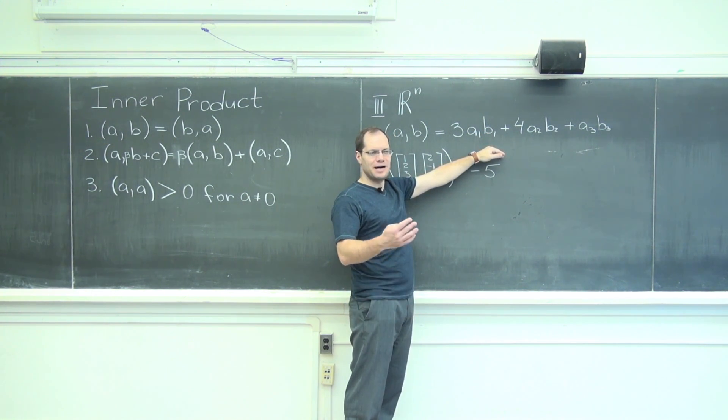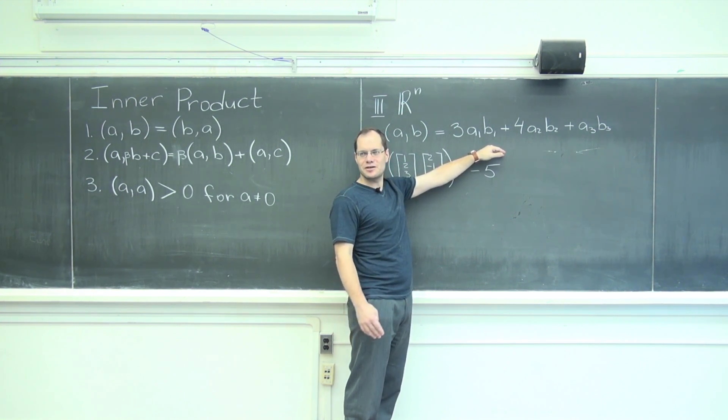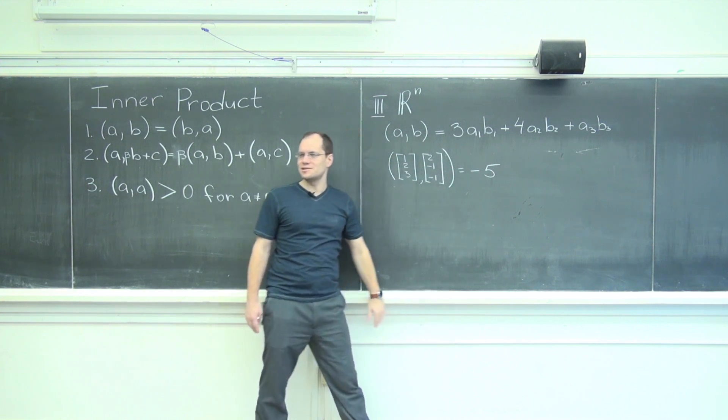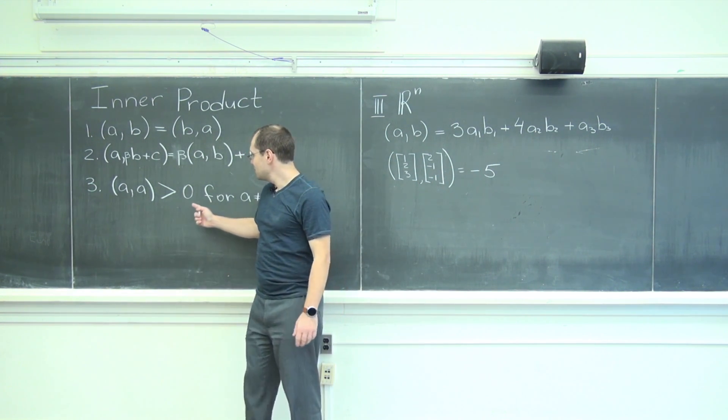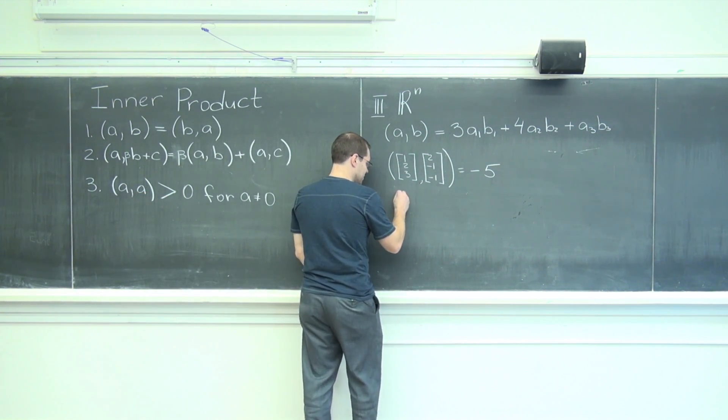I don't have a by itself, I don't have b by itself, I don't have a squared, I don't have b squared. I don't have any of those. I don't have sine of a. Every term is linear.